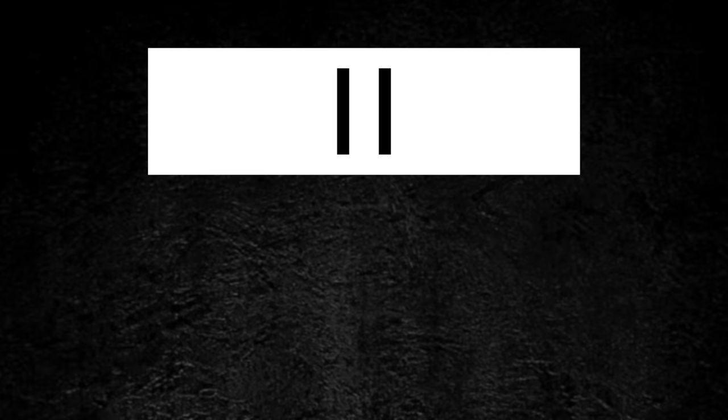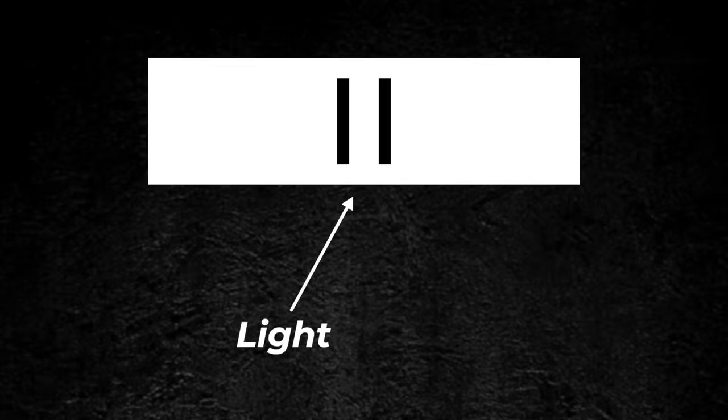So how does the double-slit experiment work? Well basically, you shine light on two slits, and the light passes through them, and you see what pattern appears on a distant screen.